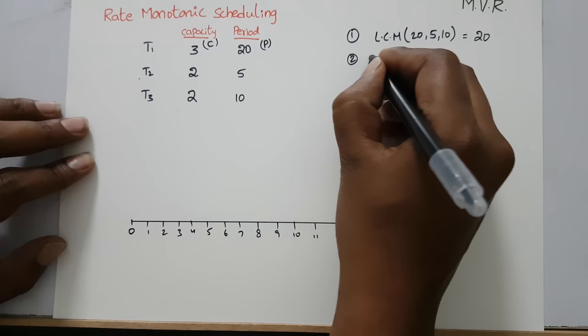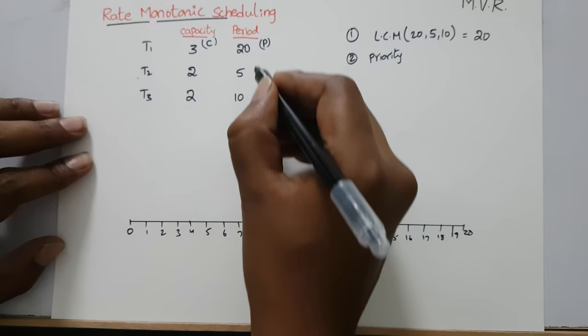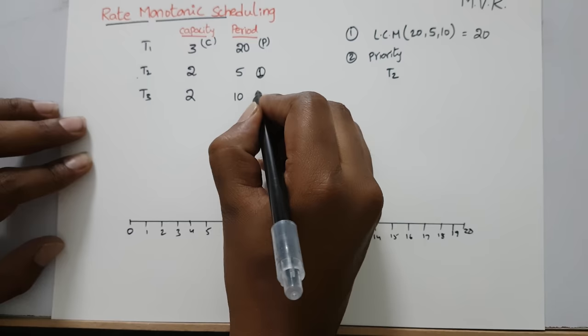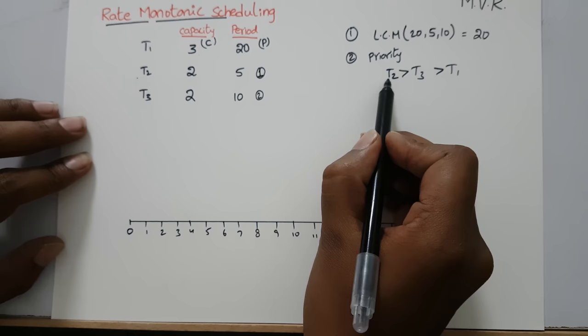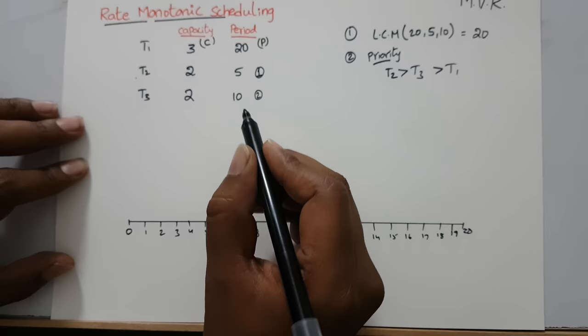The second point is priority — which task has to be executed first. In Rate Monotonic Scheduling, whichever process has the least period will have the highest priority. T2 has the least period, so it has first priority, followed by T3, then T1. So the execution order is T2 first, then T3, then T1.